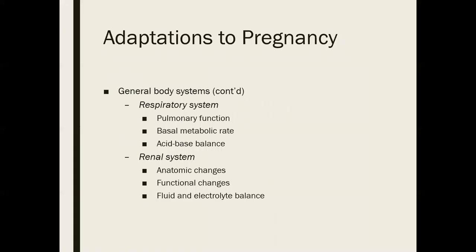Regarding the respiratory system, oxygen requirements increase during pregnancy due to an accelerated metabolic rate. The fetus also requires oxygen, and elevated levels of estrogen cause the ligaments in the rib cage to relax, allowing for increased chest expansion. Pregnant women breathe more deeply, with an increase in tidal volume — the amount of gas moved in and out of the lungs with each breath. Expiratory reserve volume and residual volume decrease progressively throughout pregnancy, so total lung capacity actually decreases slightly due to diaphragm and chest wall elevation.